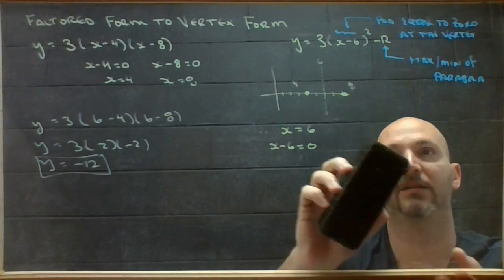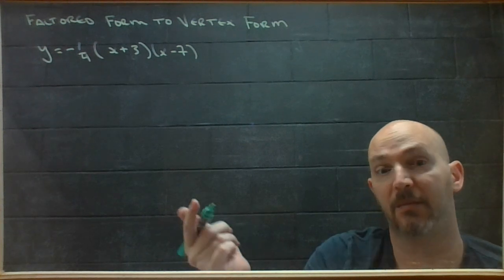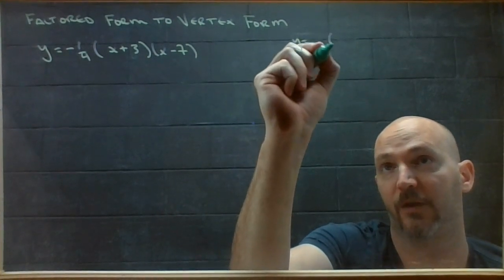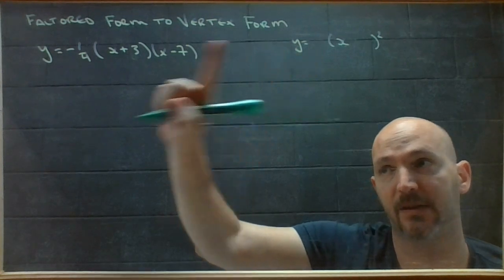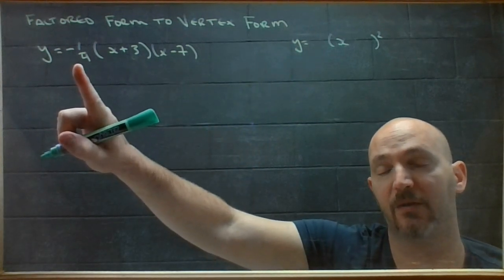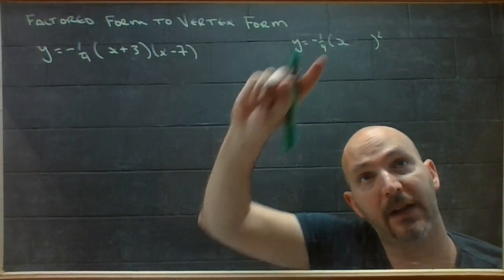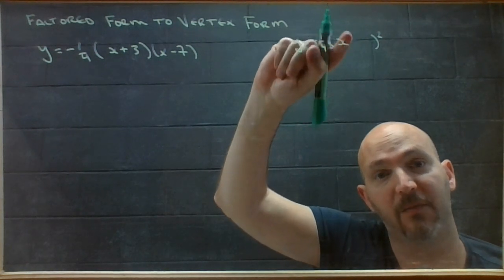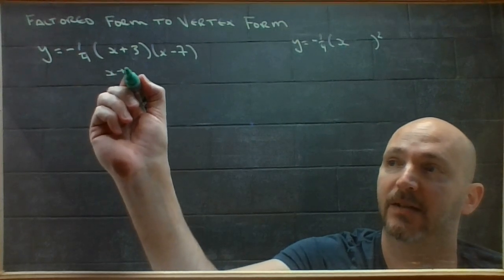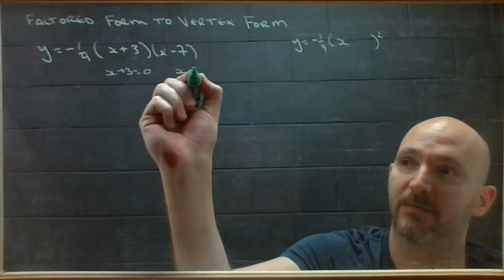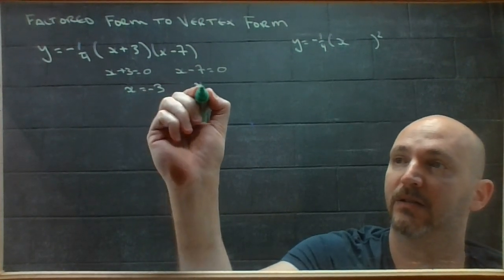This one has a fraction. So, I need my basic vertex form parabola. I know that the transformation factor is going to match the transformation factor no matter what form I'm in. Now, I need to figure out where the x value of the vertex is so I can build this little pod. So, I will have x-intercepts from this thing when x plus 3 equals 0 and when x minus 7 equals 0. So, that's at negative 3 and at 7.